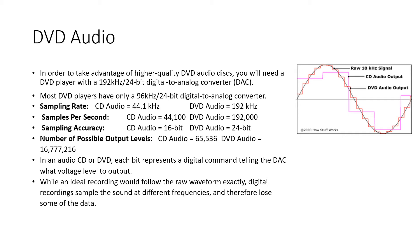In an audio CD or DVD, each bit represents a digital command telling the DAC what voltage level to output. While an ideal recording would follow the raw waveform exactly, the digital recording samples the sound at different frequencies and therefore loses some data. The graph shows how the highest quality DVD audio compares to CD quality — DVD follows the signal more closely but it is still a long way from perfect. To get the full experience of Dolby Digital sound used on many DVDs, you need a home theater system with 5 speakers, a woofer, and a receiver that is either Dolby Digital ready or has a built-in Dolby Digital decoder.